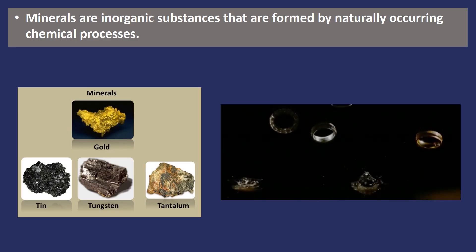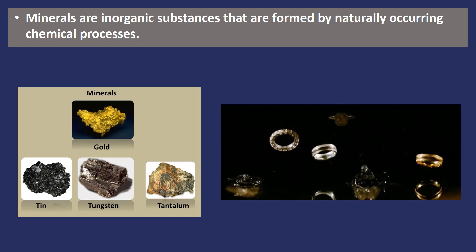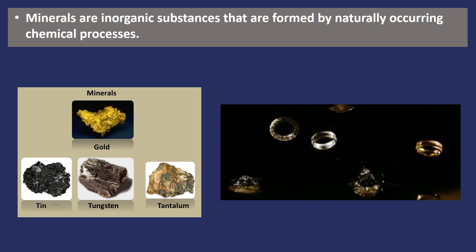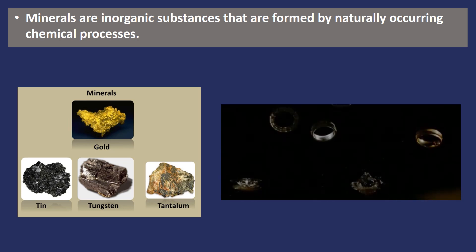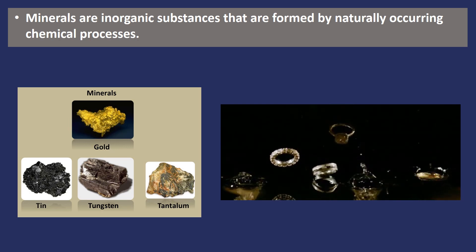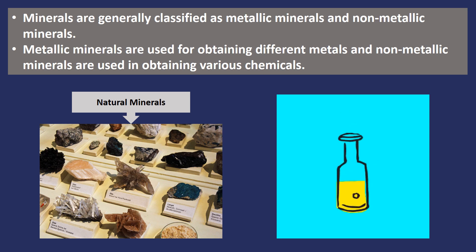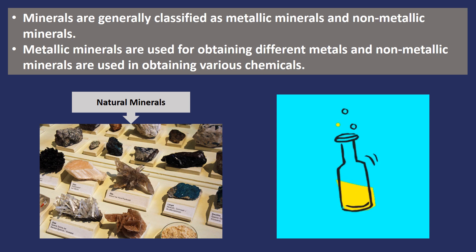Minerals are usually found in the soil, formed by extreme temperatures. They are inorganic substances and this formation happens naturally. There are various uses of minerals — they are used in making jewellery, medicines, oil, metals, etc. Minerals are classified into metallic and non-metallic minerals, usually found in liquid and solid state. Metallic minerals are used for obtaining different metals such as iron, bauxite, etc. Non-metallic minerals are used in obtaining various chemicals like gypsum, rock salt, etc.